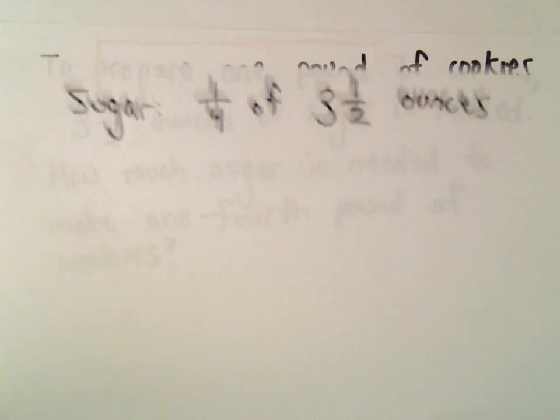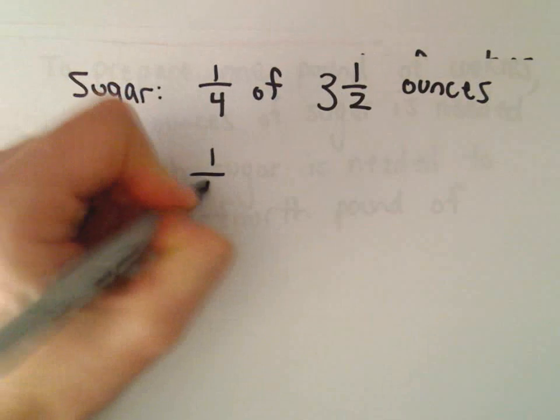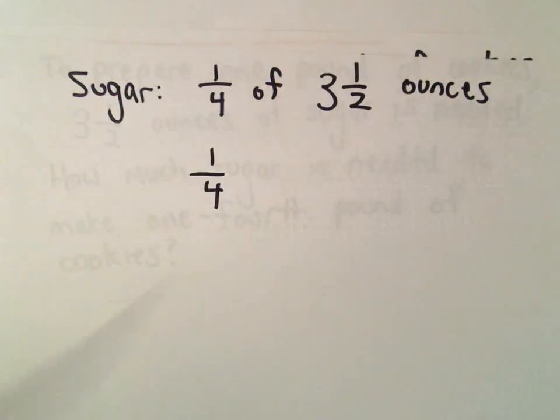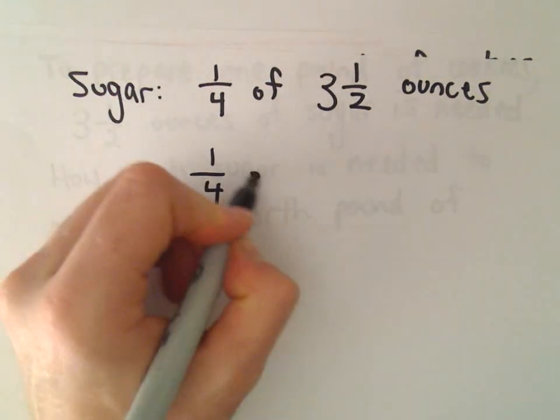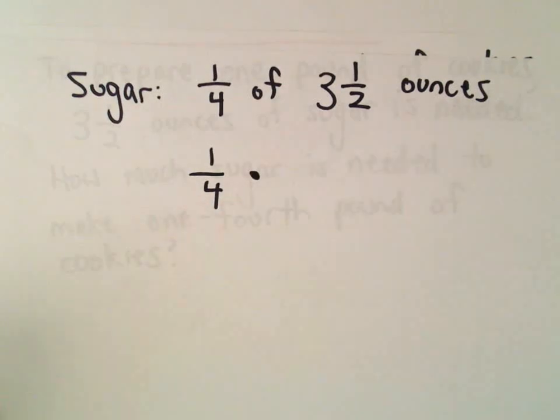So we need a quarter of the three and a half. Anytime you see the word 'of' in a problem, that almost always stands for multiplication. And that's what we'll have to do - we're going to have to take one fourth of three and a half ounces.